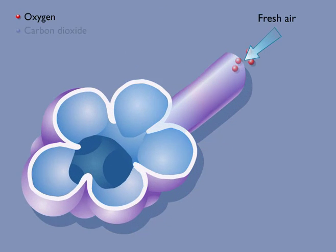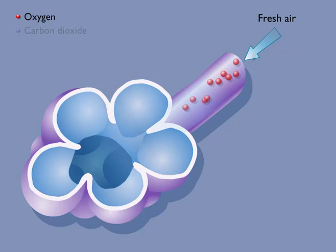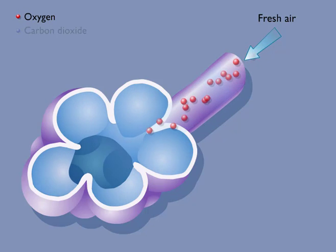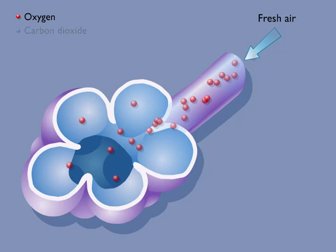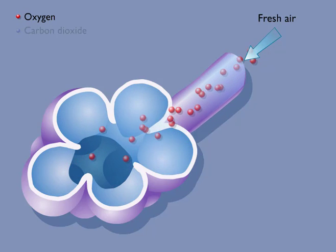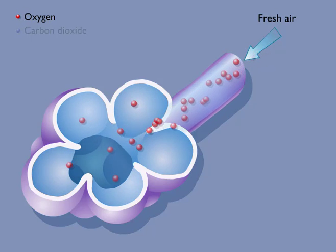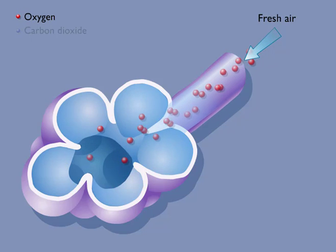Fresh air entering the lungs carries oxygen to the alveoli. The amount of gas in air or of gas dissolved in a fluid can be expressed as partial pressure, which is measured in millimeters of mercury.